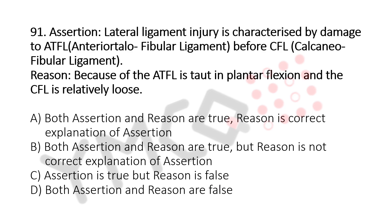A. Both assertion and reason are true, and reason is the correct explanation of assertion. B. Both assertion and reason are true, but reason is not the correct explanation of assertion. C. Assertion is true, but reason is false. D. Both assertion and reason are false.